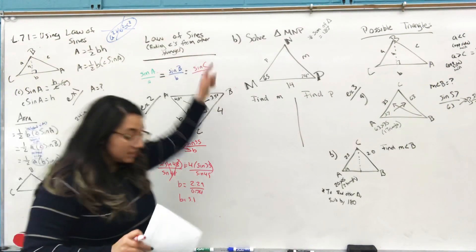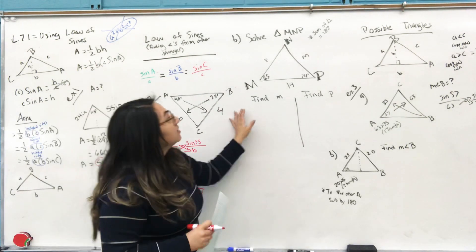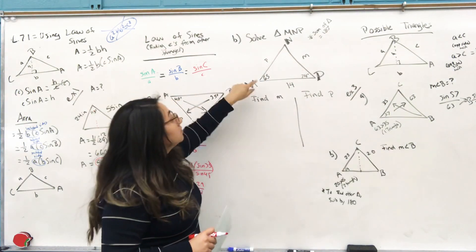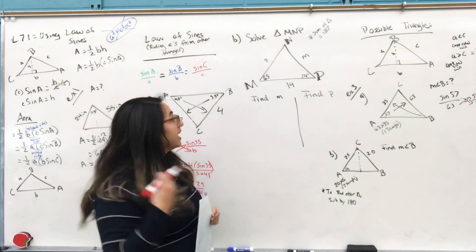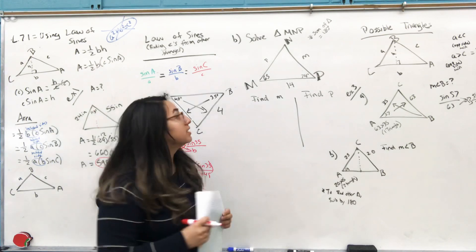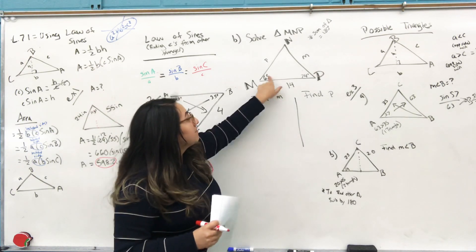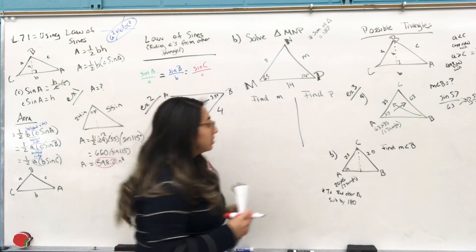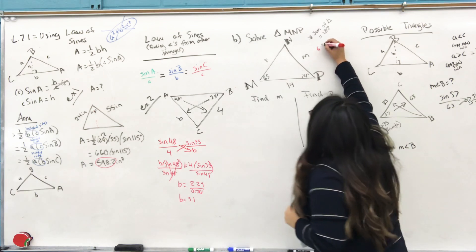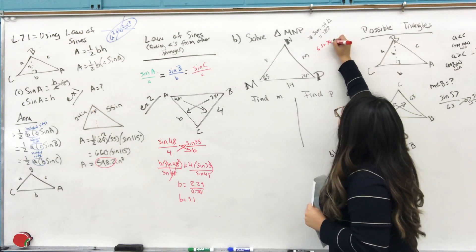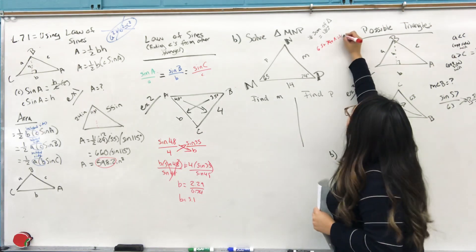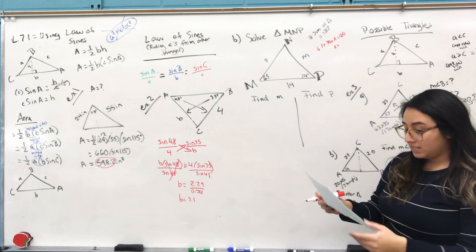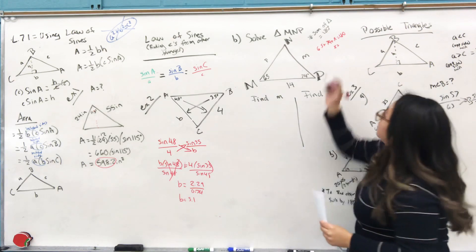Part B: solve the triangle. We don't have sides p or m, and angle N is unknown. The easiest thing to find first is the missing angle. Going back to geometry, all three angles of a triangle equal 180 degrees. We know one is 65 and another is 74. So N = 180 − 65 − 74, which gives us 41 degrees.